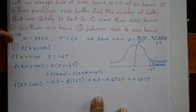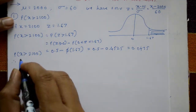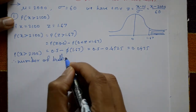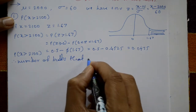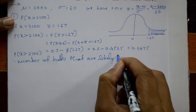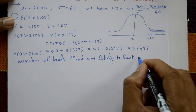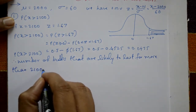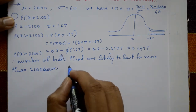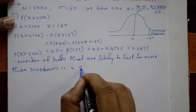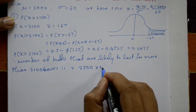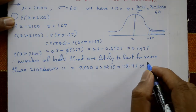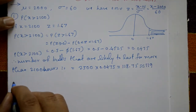We calculate the number of bulbs out of 2500. Therefore, number of bulbs likely to last more than 2100 hours = 2500 × 0.0475 = 118.75, approximately 119 bulbs.